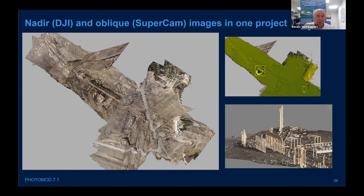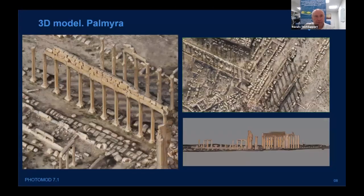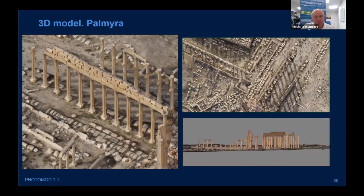Here is a sample of a project combined from two flights: the first is nadir from a DJI camera and another is oblique from a SuperCam camera. You can see that we were able to make a model working with them all together. This is Palmyra in Syria — a 3D model of this architectural monument, which was partially destroyed.